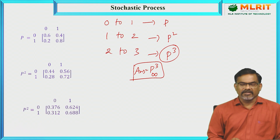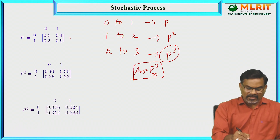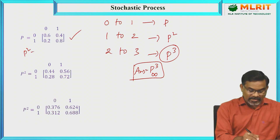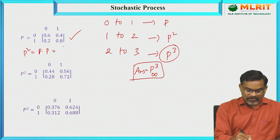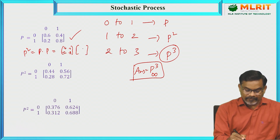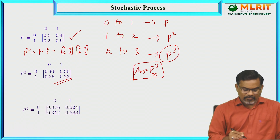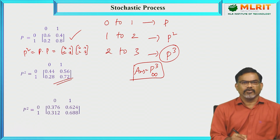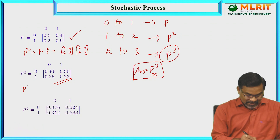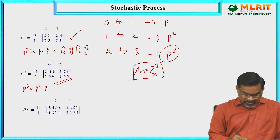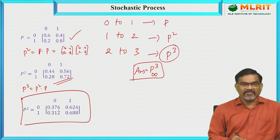To calculate this, let us find P² = P × P. Multiplying the matrix with entries 0.6, 0.4, 0.2, 0.8 by itself gives P² = [[0.44, 0.56], [0.28, 0.72]]. Then P³ = P² × P, which gives [[0.376, 0.624], [0.312, 0.688]].